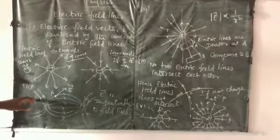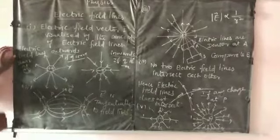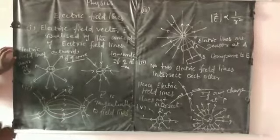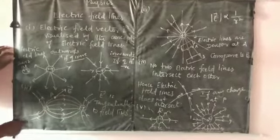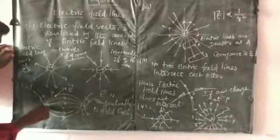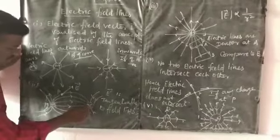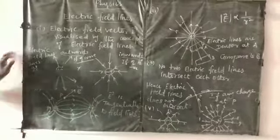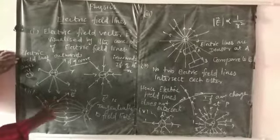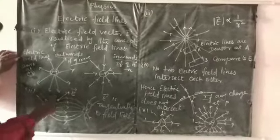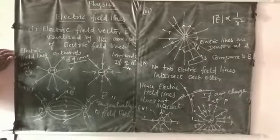Next point: the electric field lines form a continuous and closed curve and do not intersect with each other. Here we have a positive charge plus Q and a negative charge minus Q placed at a particular distance. The electric field lines are continuous closed curves and do not intersect with each other.